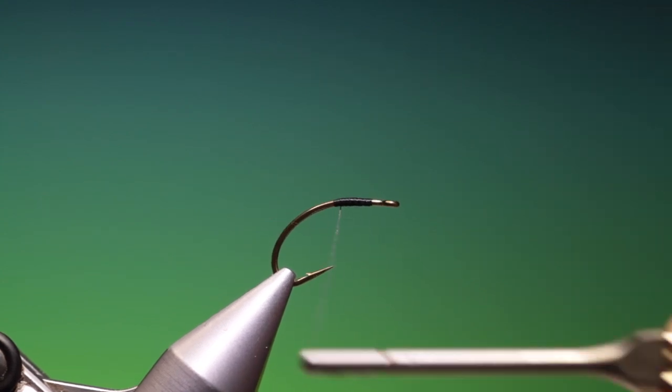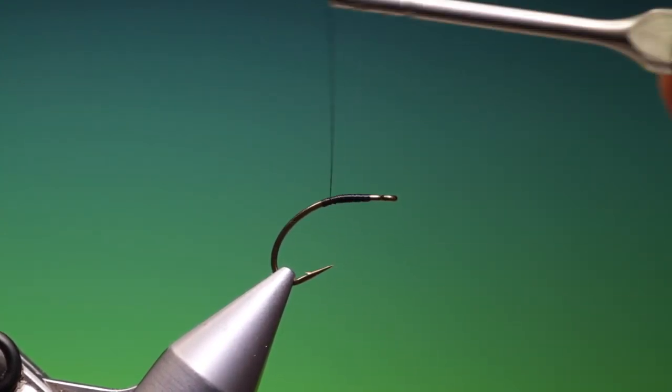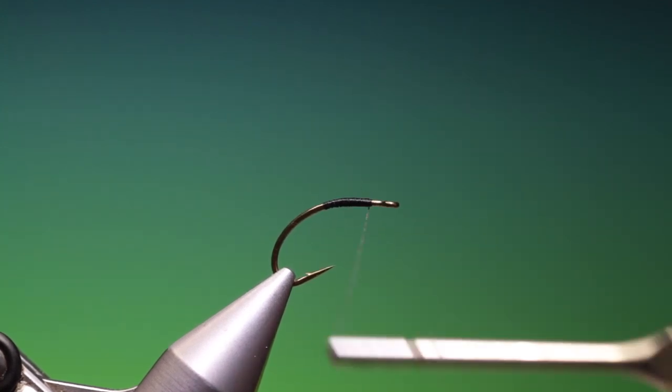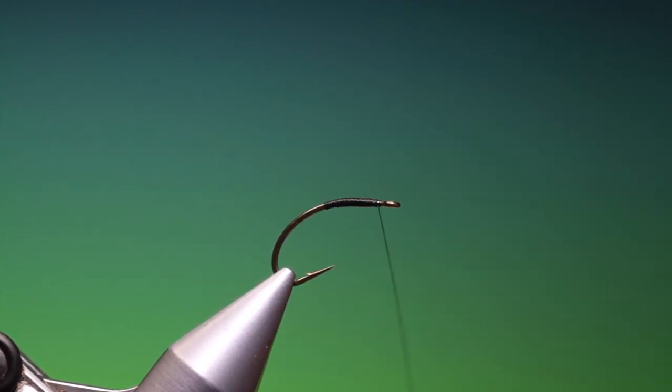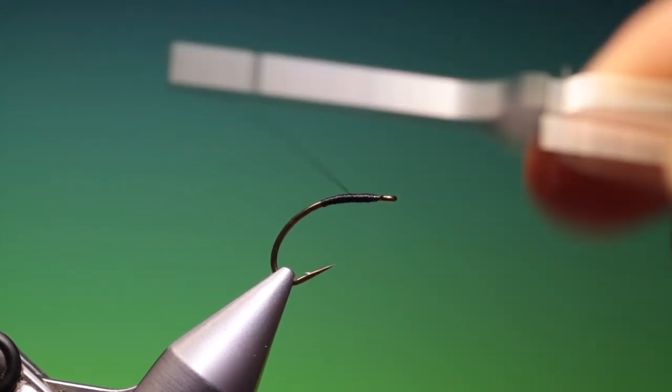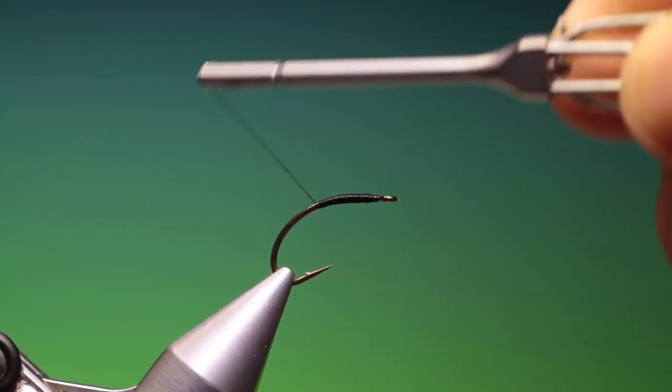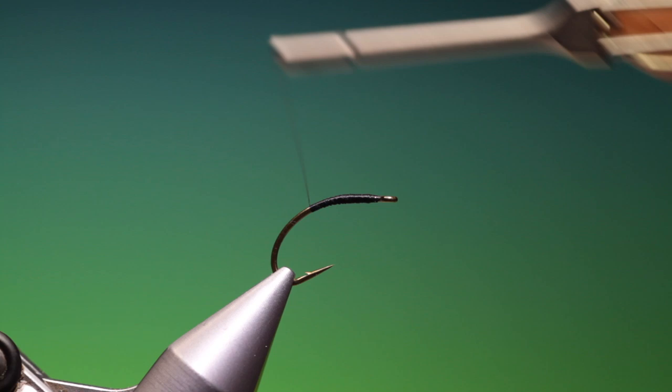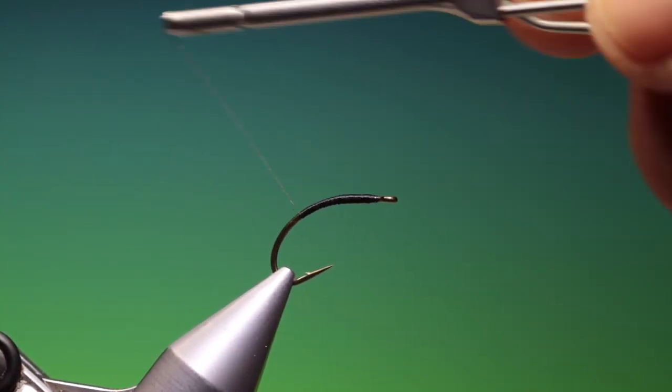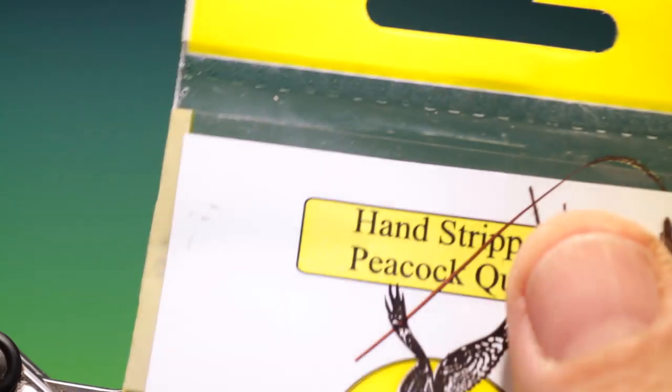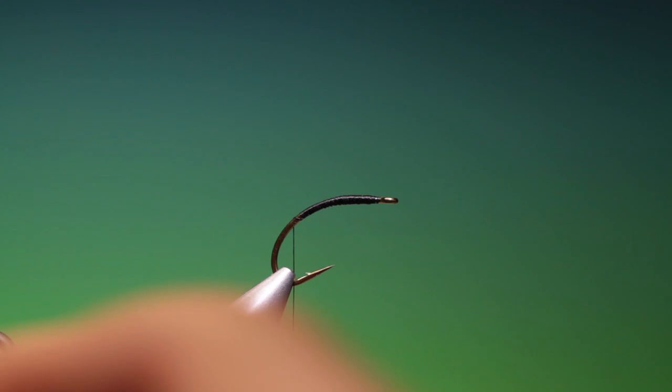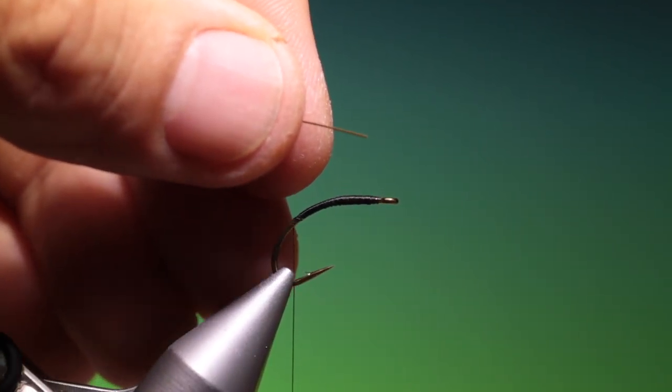Then we want to go a little bit further. This is just the taper of the body, then we can go back up again and over the thorax, flatten our thread, forward, and then we can go down the hook bend to back there. Then what we need is some stripped peacock quill. This is fluorescent yellow. I'll just trim that off.